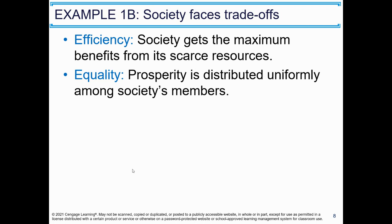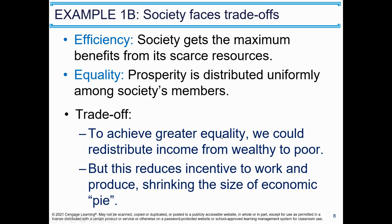Example B: society also faces trade-offs between efficiency and equality. Efficiency is defined as how society gets the maximum benefit from its scarce resources. Equality means prosperity is distributed uniformly among society's members. To achieve greater equality, we could redistribute income from wealthy to poor, but this reduces incentive to work and produce, shrinking the size of the economic pie. There's a trade-off right there.